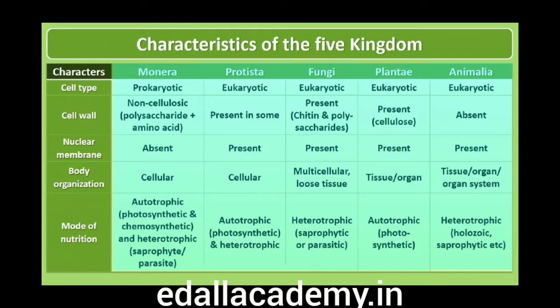Over time, an attempt has been made to evolve a classification system which reflects not only morphological, physiological and reproductive similarities, but is also phylogenetic — that is, based on evolutionary relationships. In this chapter we will study characteristics of kingdoms Monera, Protista and Fungi of the Whittaker system of classification.